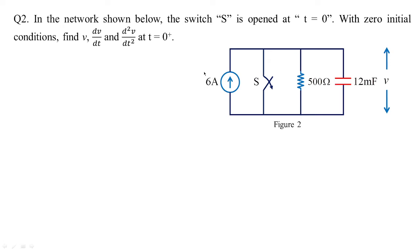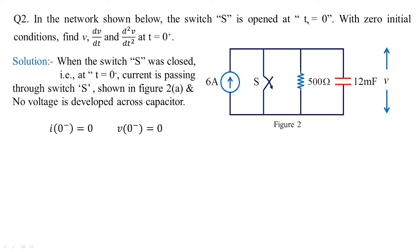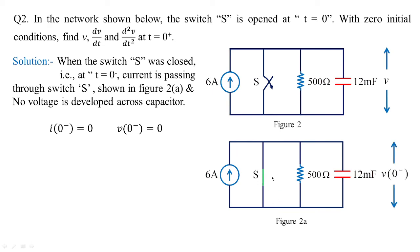Now with small alterations for the second problem: the current source is 6 amperes, the same switch is used, the resistor changes to 500 ohms, and instead of an inductor we have a 12 millifarad capacitor. We need to find v, dv/dt, and d²v/dt² at t=0+. When the switch is open at t=0, before that the switch was closed. When the switch was closed, current passed through the switch and no voltage was developed across the capacitor.